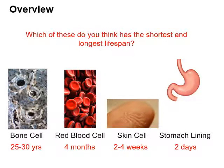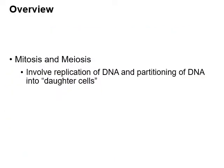Here are the actual lifespans: bone cells can last 25 to 30 years, so many of you have bone cells you've had since birth. Blood cells only last four months. Skin cells don't last very long either — but actually the shortest-lived cells in our bodies are those lining the stomach. Because they're in such a nasty environment with all that stomach acid, those cells only last about two days. In the time since this semester began, you've gone through many iterations of stomach lining cells.